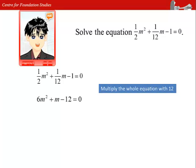Hence, we get 6m² plus m minus 12 equals to 0. This is a simpler quadratic equation to work with.